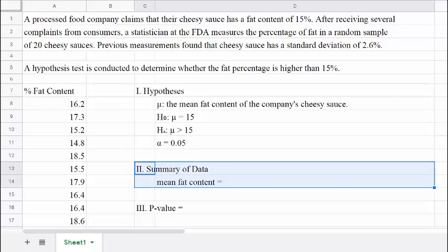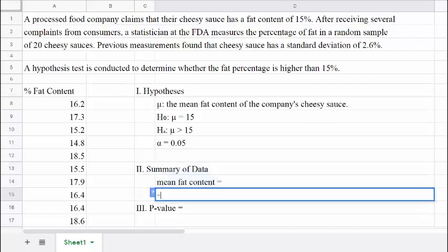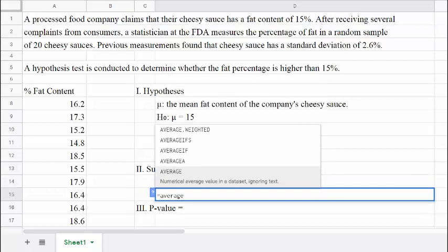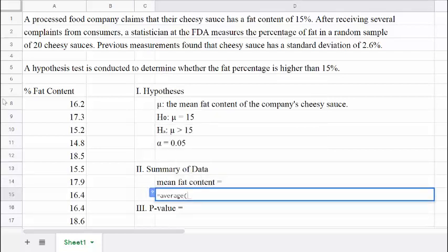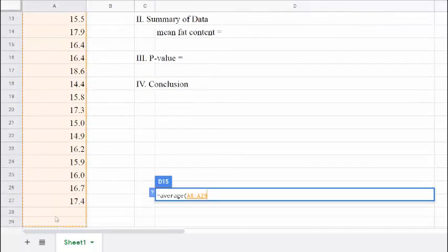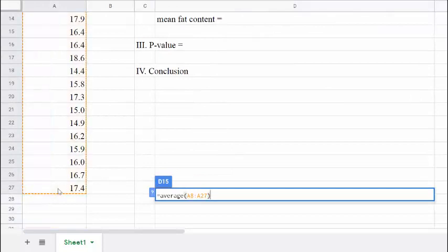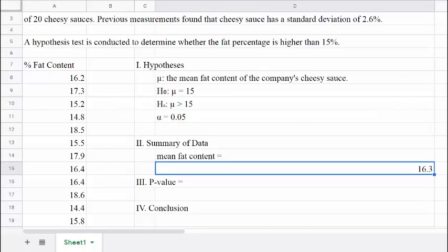In step 2 we just need to summarize our data. So in this case we just need to find the mean from the sample of the 20 cheesy sauces. Using the Google Sheets average formula, we see that the sample has a mean fat content of 16.3%.